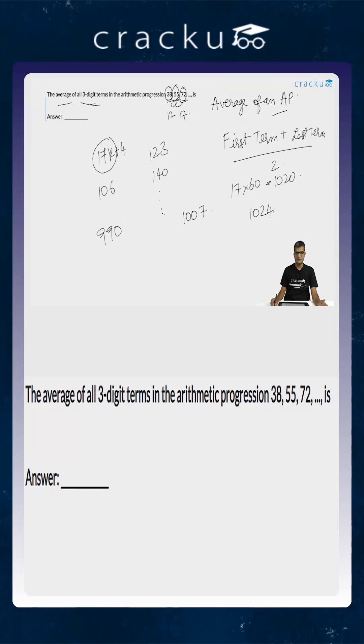So the arithmetic progression which has only three digits will be 106, 123, 140, and so on till 990.